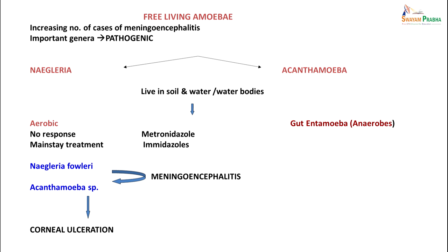Naegleria fowleri produces an acute and usually lethal central nervous system disease called primary amoebic meningoencephalitis. Acanthamoeba species and Balamuthia species are opportunistic free-living amoebae capable of causing granulomatous amoebic encephalitis in individuals with compromised immune systems. While Sappinia pedata has been recently implicated in a case of amoebic encephalitis. They are all free-living amoebae, but increasingly becoming more common in causing amoebic encephalitis.